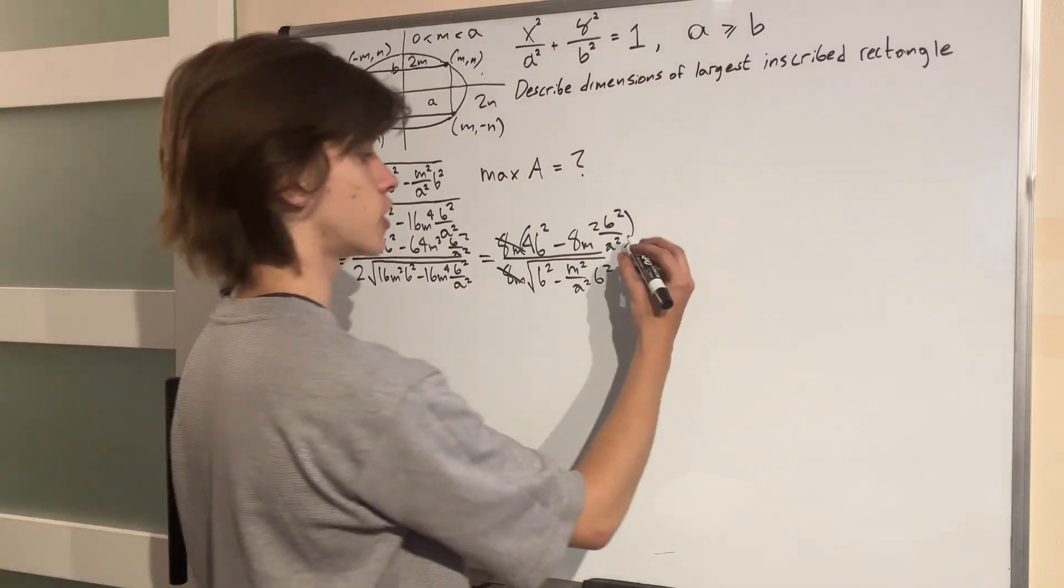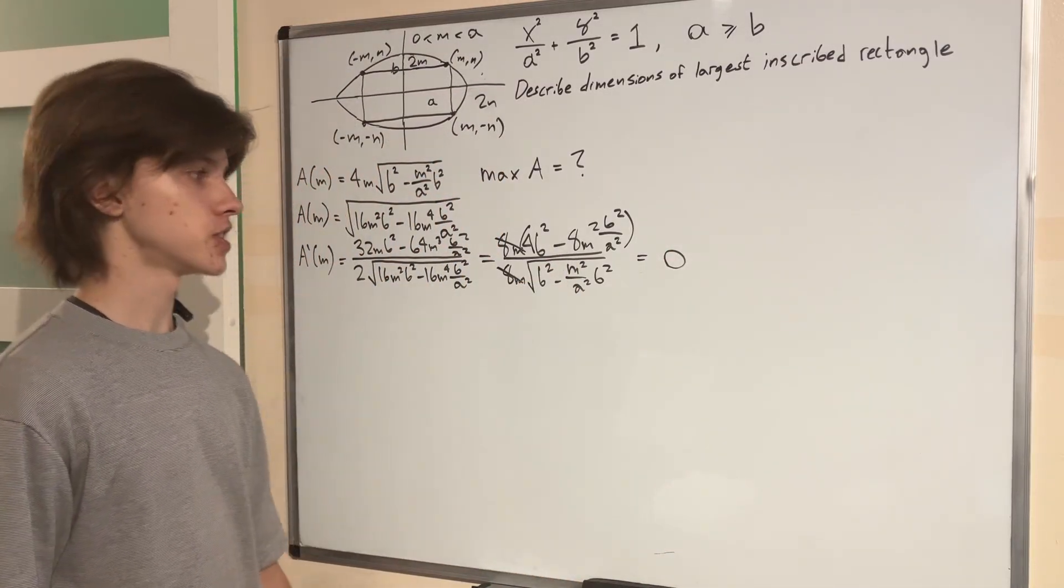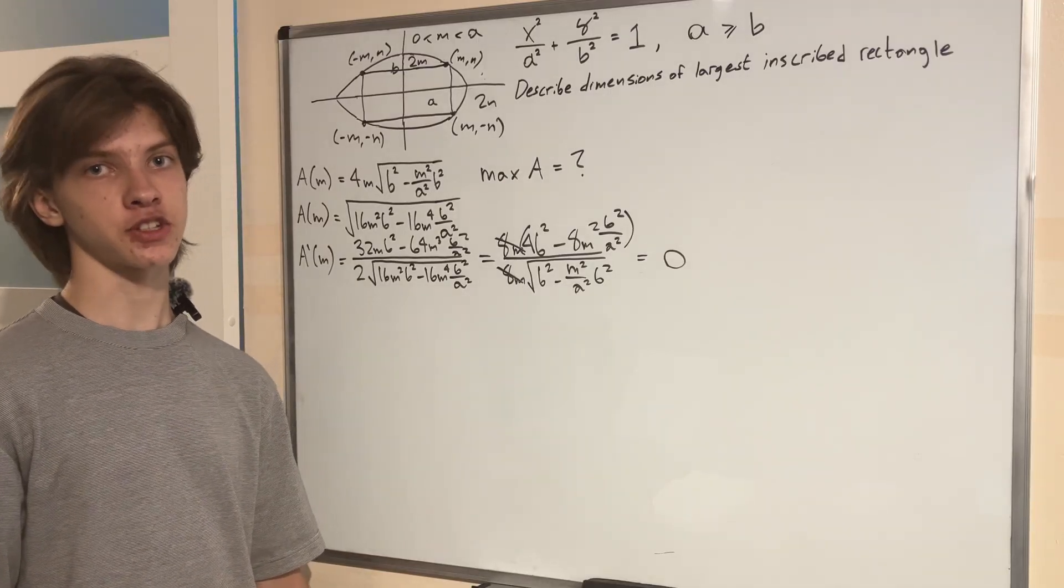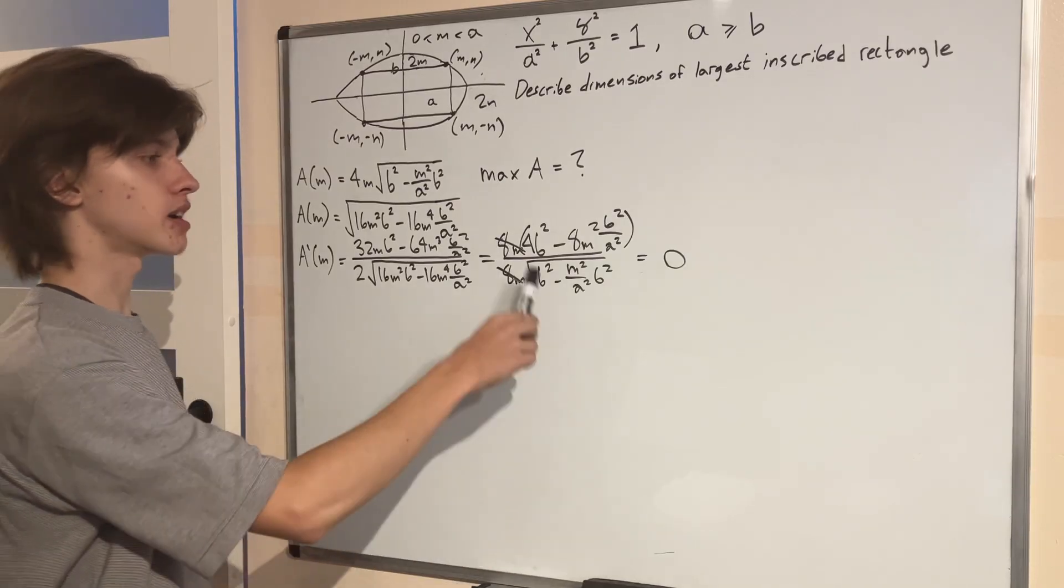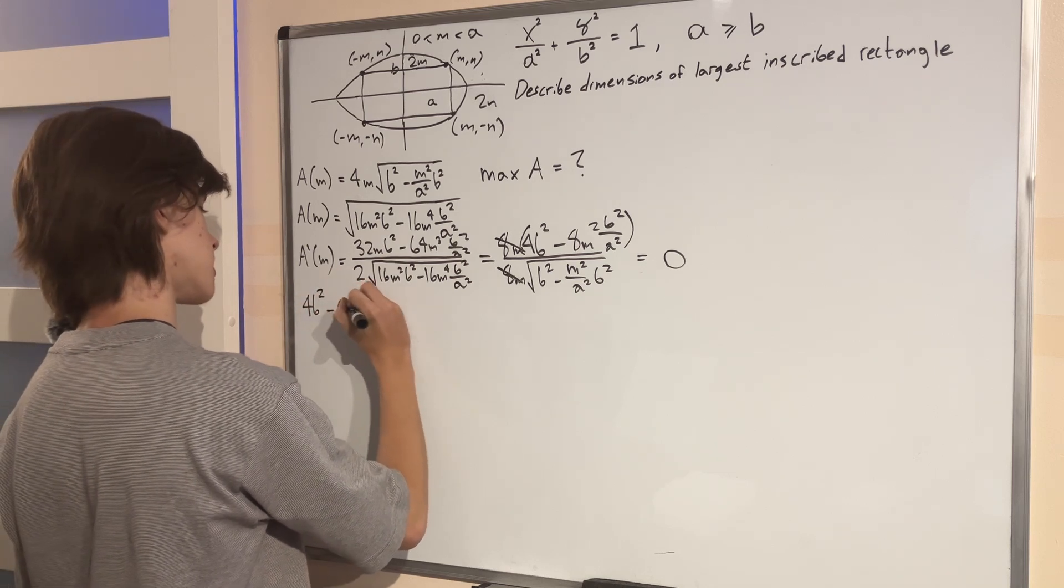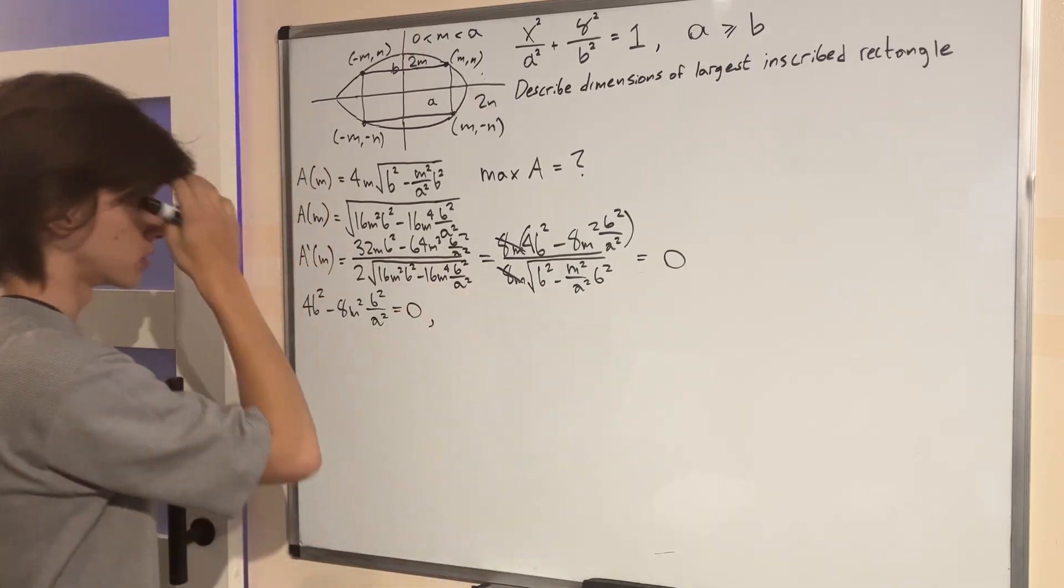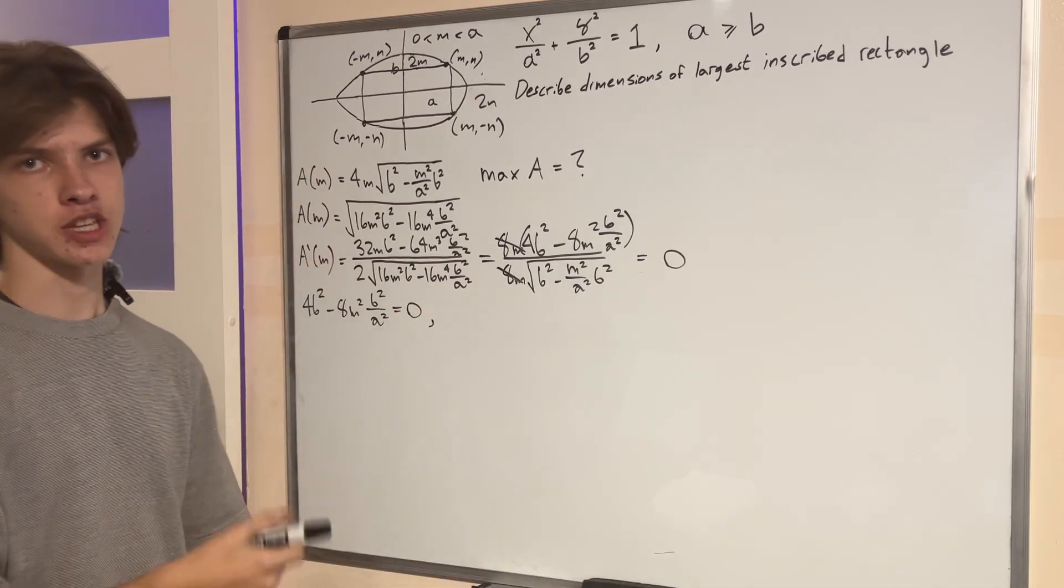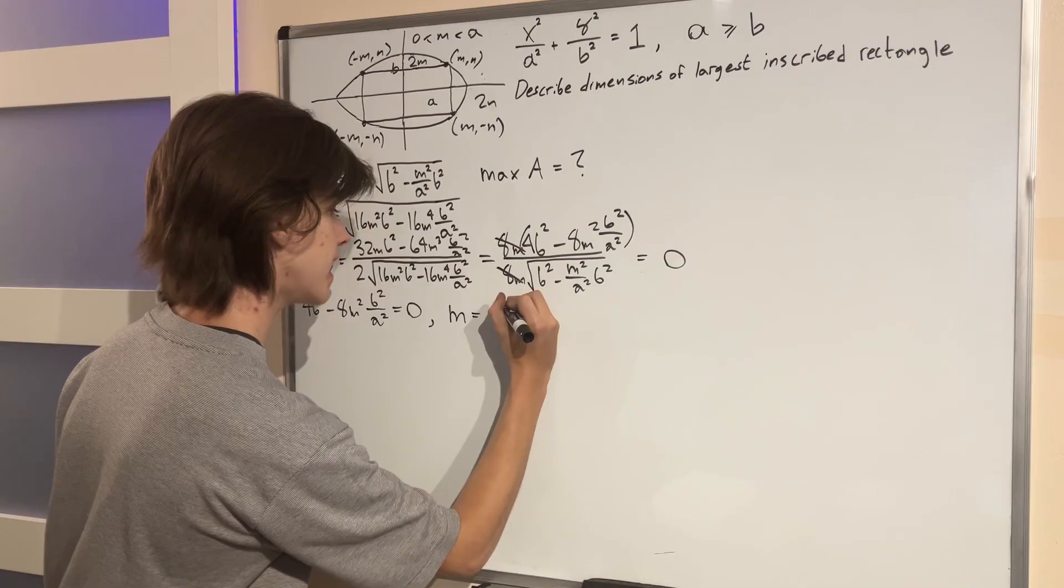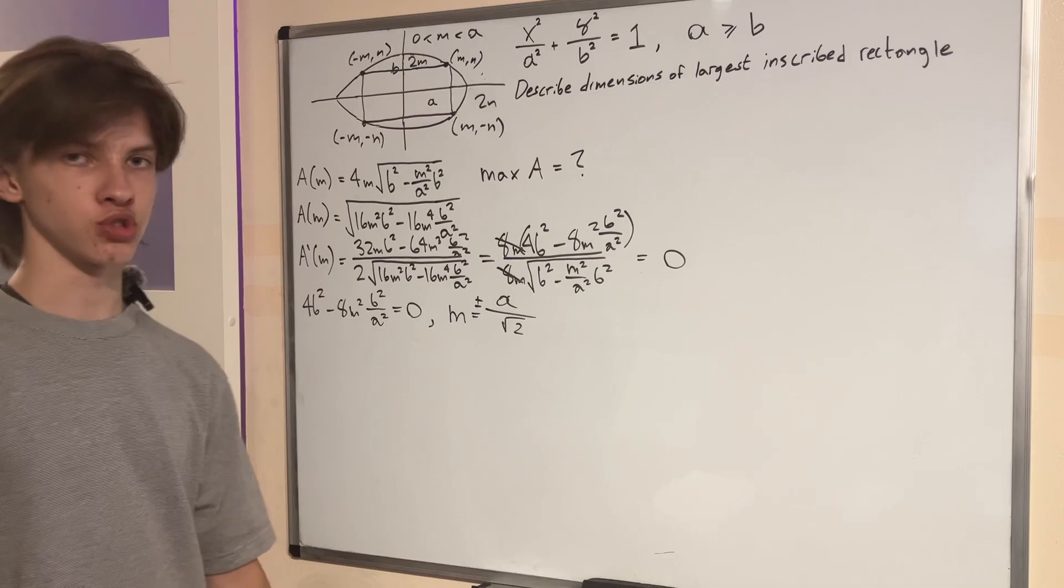To proceed, we can set this derivative equal to zero, and then simply find the values of M for which it is equal to such. And what is nice about this fraction right here is that in the denominator, we have a square root that we previously justified that is not going to be equal to zero. So we can simply multiply both sides by the square root and get the very nice equation B squared minus 8M squared B squared over A squared equals zero. And now we can use this to find M simply with a bit more algebra. I'm going to skip a few steps and just tell you what M is equal to right here. We get that M is equal to A over the square root of two with a plus minus sign since we're taking the root right here.